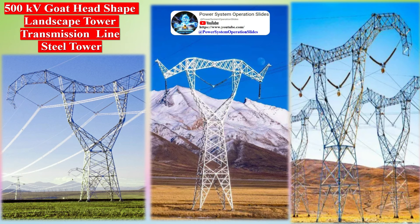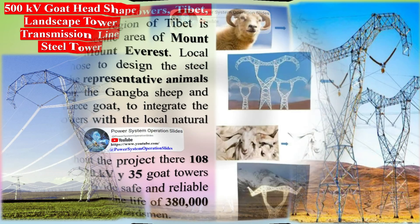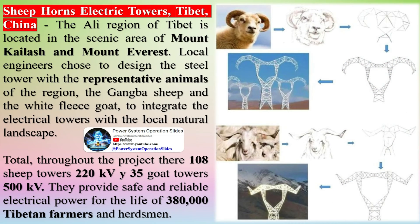Different types of towers are used worldwide. The 500 kV goat head-shaped landscape tower transmission line steel tower is used in the Tibet area. Sheep horns electric towers are also found in Tibet, China. The Ali region of Tibet is located in the scenic area of Mount Kailash and Mount Everest, where local engineers designed the steel tower with representative animals of the region — the Gangba sheep and the white fleece goat — to integrate the electrical towers with the local natural landscape.